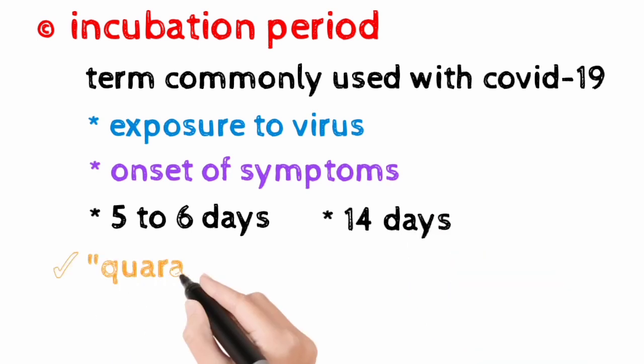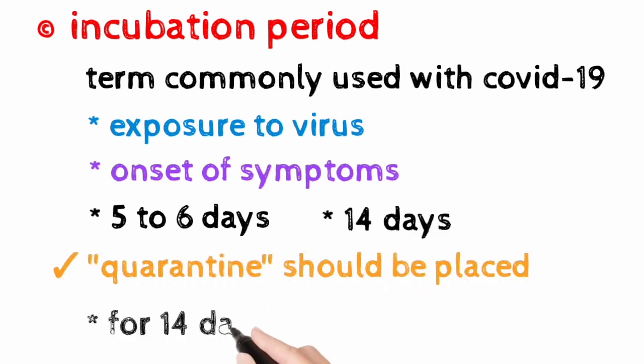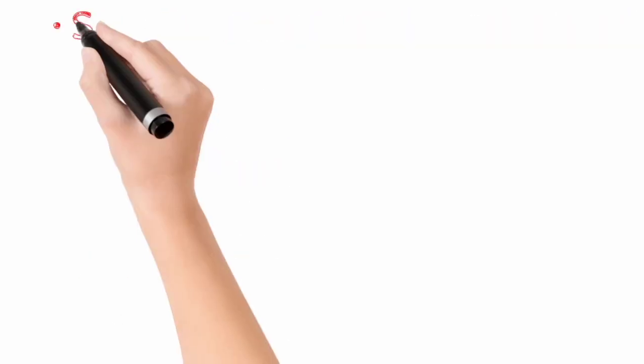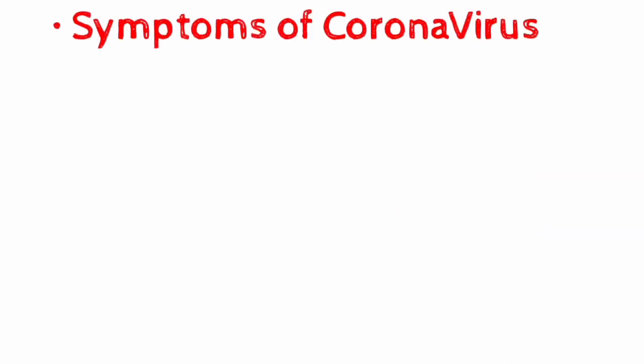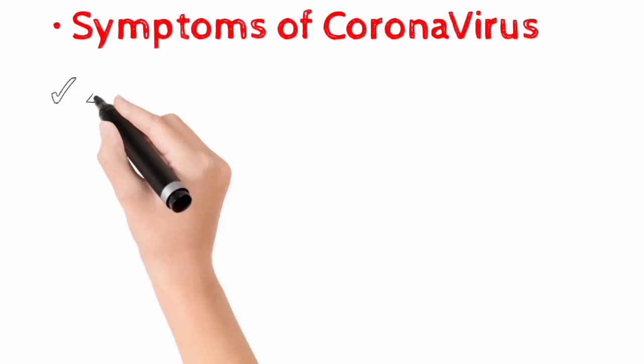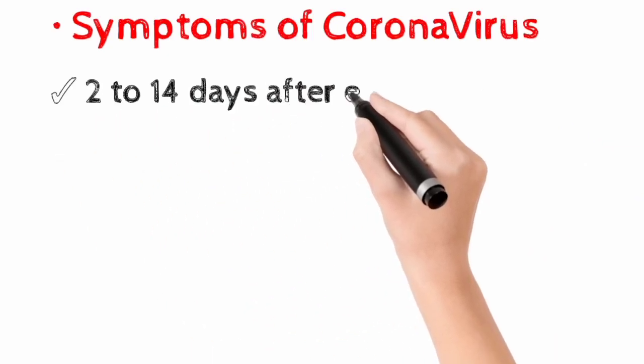Thus, a quarantine should be in place for 14 days for a person that is infected with coronavirus. If we talk about the symptoms of the coronavirus, the symptoms basically appear 2-14 days after the exposure.